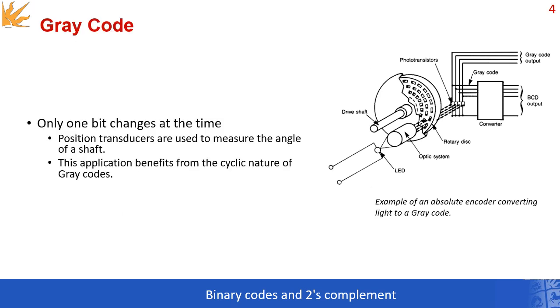Historically, gray code became a necessity because of electromechanical applications of digital systems, such as automotive braking systems. In such examples, it is sometimes necessary for some sensor to produce a digital value that indicates a mechanical position. This is an example of an obsolete encoder converting light to a gray code. As you can see, the light goes through this rotating disk and is converted to a gray code, which you can output or pass through a converter to a BCD output.